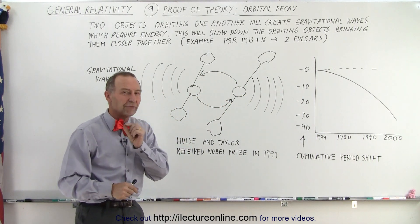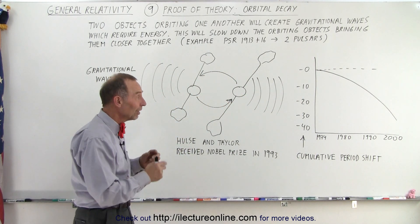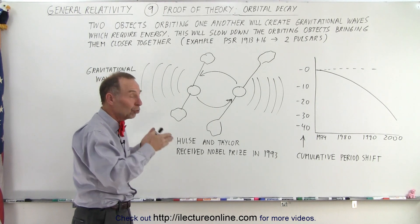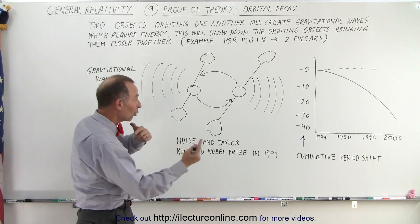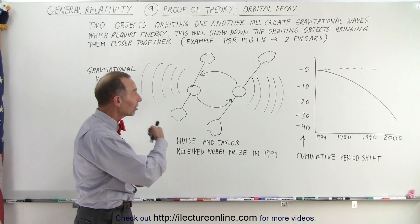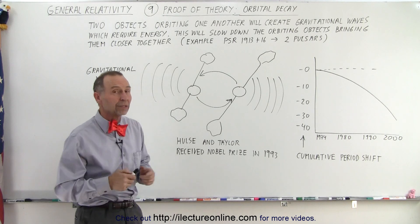It's a tiny fraction, a very small time period, that slowly over time would accumulate. And so, they were actually able to show that over time, the orbits about one another were slowing down, and the resulting pulsation of the pulsars were slowing down as well.